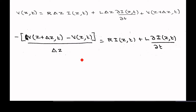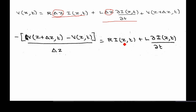Separating the voltage terms on one side and current terms on the other side, and taking delta z common in both terms, we get: −[v(z + delta z, t) − v(z, t)] / delta z = r·i(z, t) + l·(∂i/∂t).